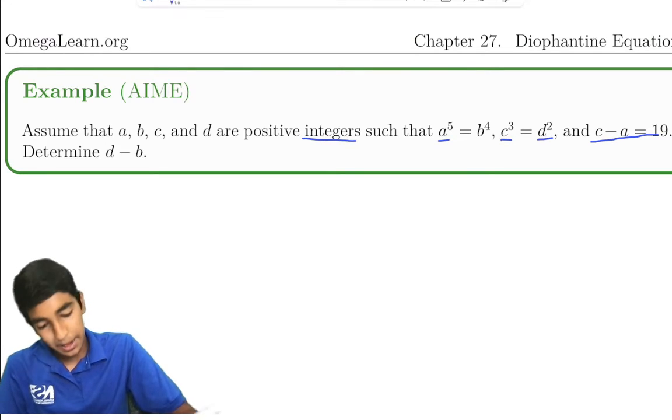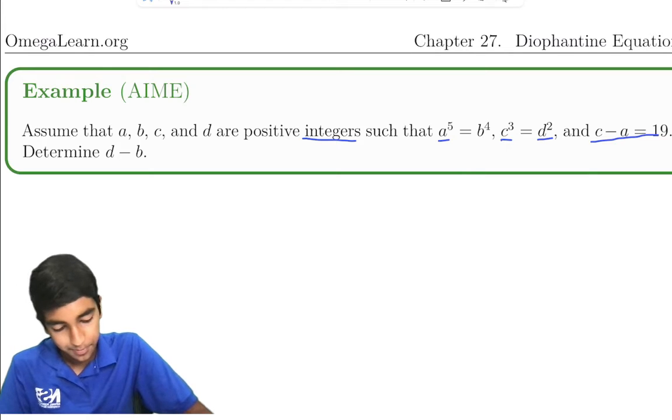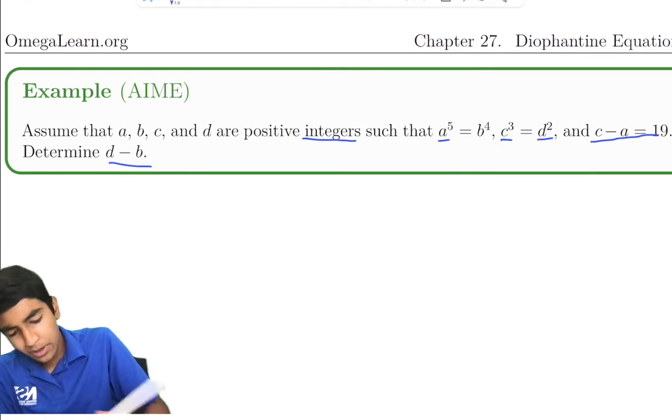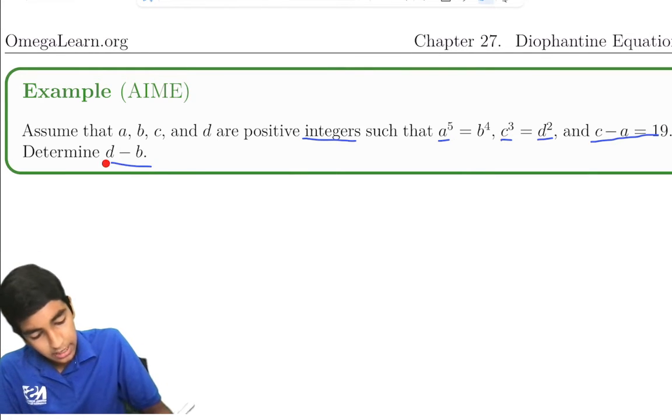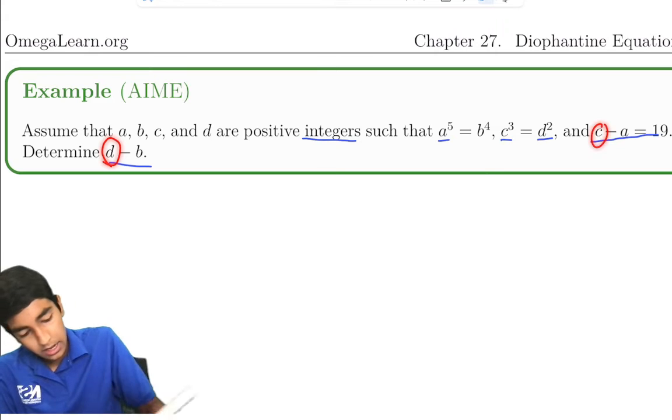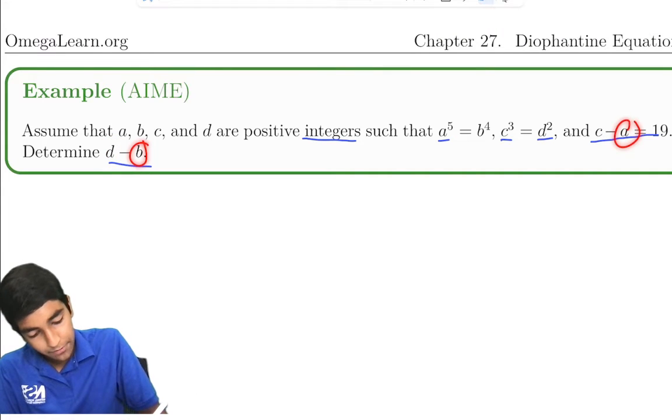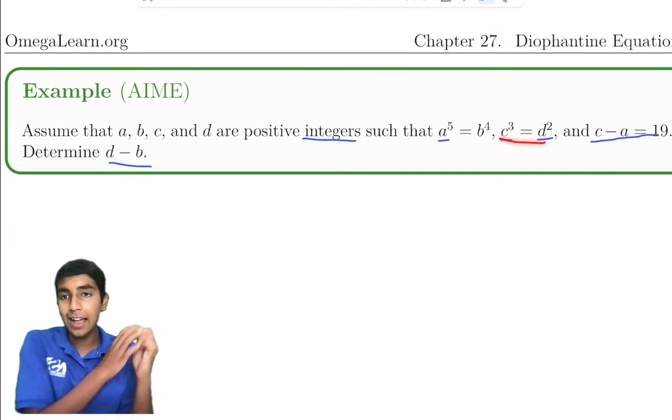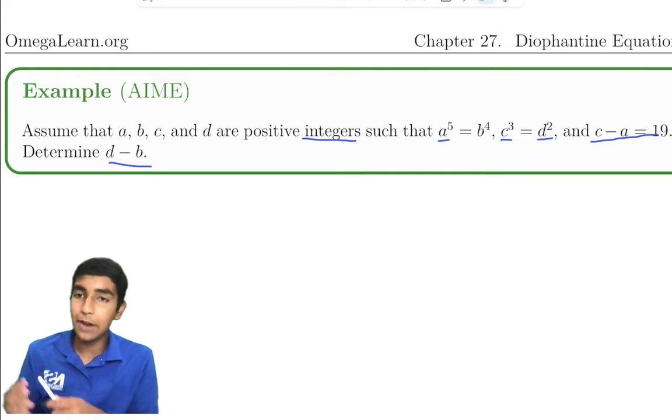So the key thing here is that we're looking for d - b. So we're trying to maybe somehow find d in terms of c and b in terms of a, because we've got these equations that relate c and d, and we've got another pair of equations that relate a and b.